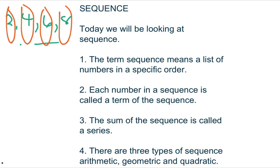The sum of the sequence is called a series. So 2 plus 4 plus 6 plus 8, that will give us a series. There are three types of sequences: arithmetic, geometric, and quadratic.